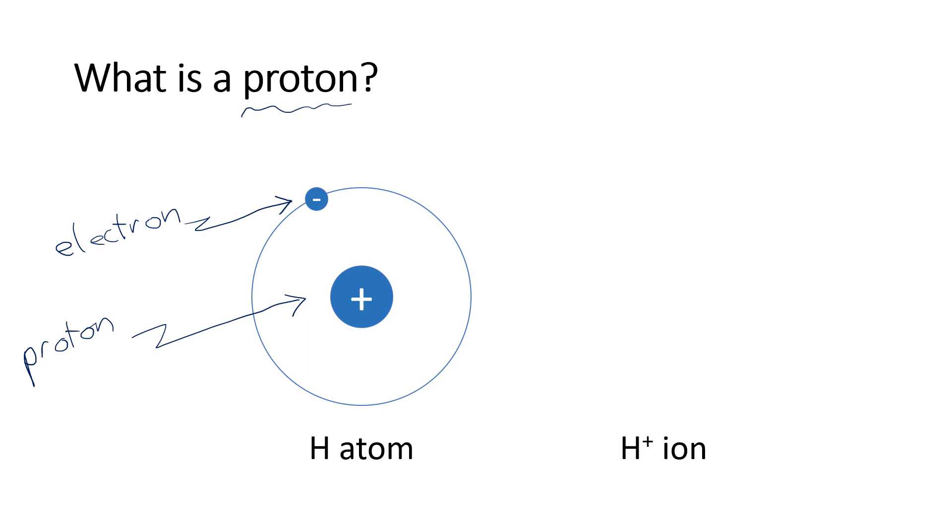So if we wanted to get just that proton all by itself, we would simply take away the electron. And when we take away that electron, we call it a hydrogen ion. So what's left, that proton, is the same thing as a hydrogen ion. So yes, a proton and a hydrogen ion are just two different names for the same thing.